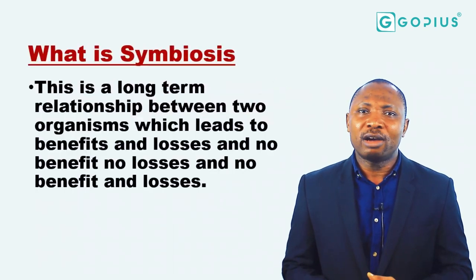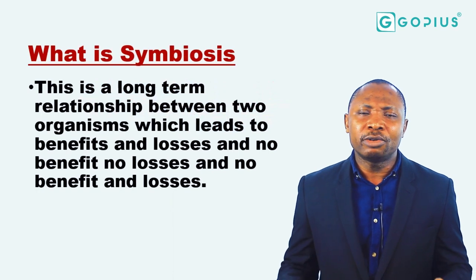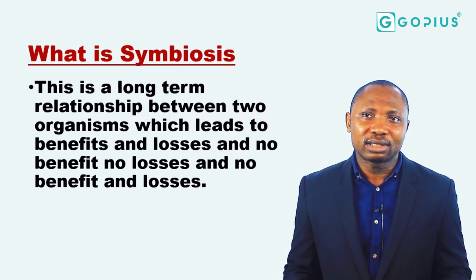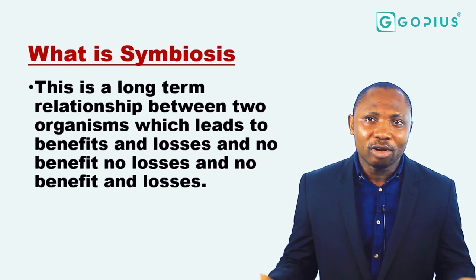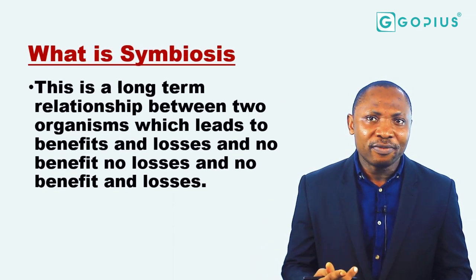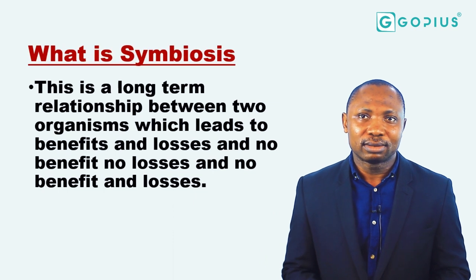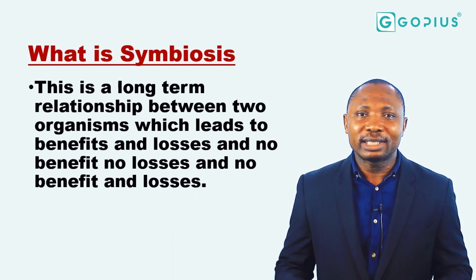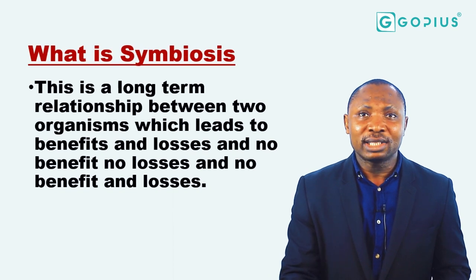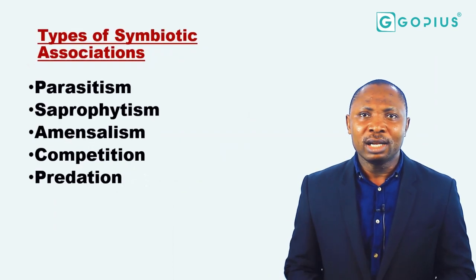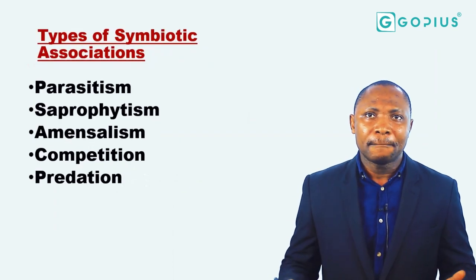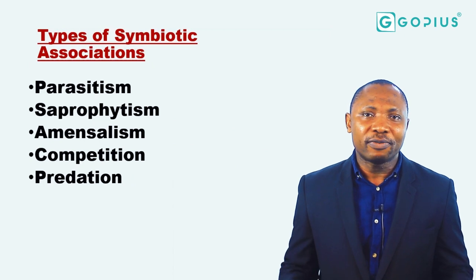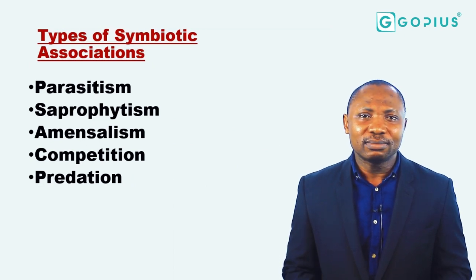What is symbiosis? This is a long-term relationship between two organisms which leads to benefits and losses, no benefits and no losses, or no benefits and losses. We'll look at the different types of symbiosis: parasitism, saprophytism, amensalism, competition, and predation.